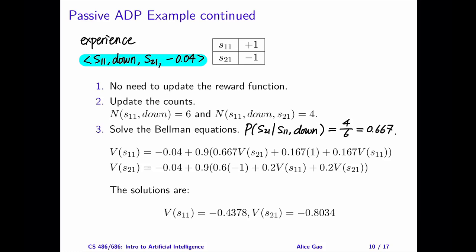Here are the two Bellman equations, one for S11 and the other one for S21. Let's look at one of them. We receive an immediate reward first, and then let's think about the future.